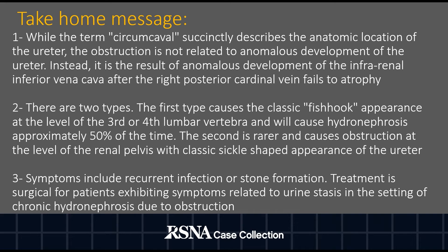To summarize, while the term circumcaval succinctly describes the anatomic location of the ureter, the obstruction is not related to anomalous development of the ureter. Instead, it is the result of anomalous development of the infrarenal inferior vena cava after the right posterior cardinal vein fails to atrophy. There are two types.